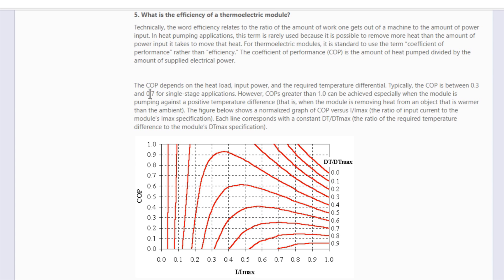COP depends on the heat load, input power and the required temperature differential. Typically the COP is between 0.3 and 0.7 for a single stage application. However, COPs greater than 1 can be achieved especially when the module is pumping against a positive temperature difference. That is when the module is removing heat from an object that is warmer than the ambient.